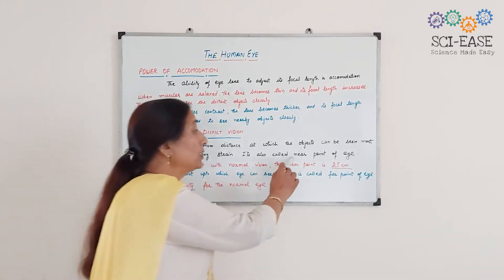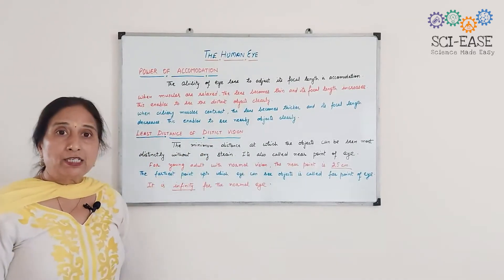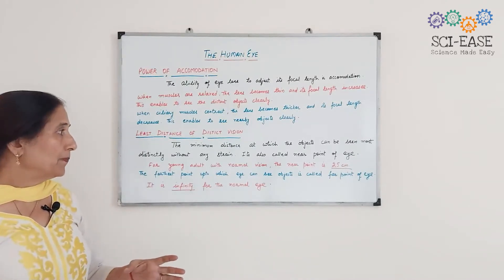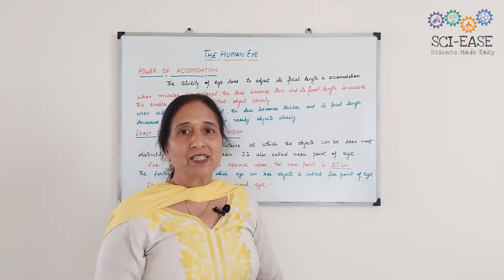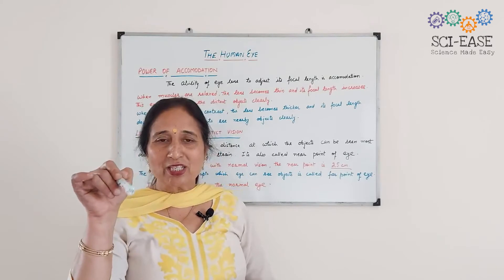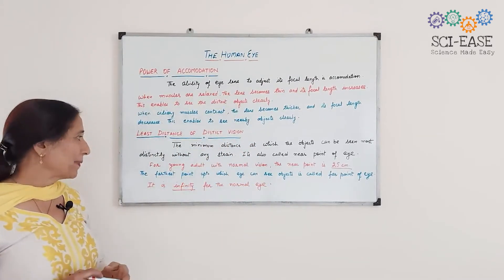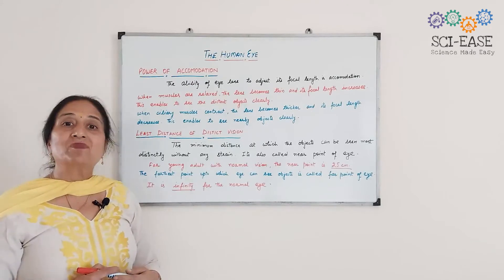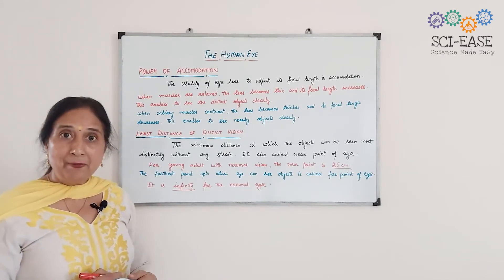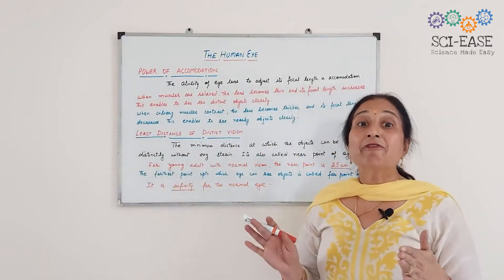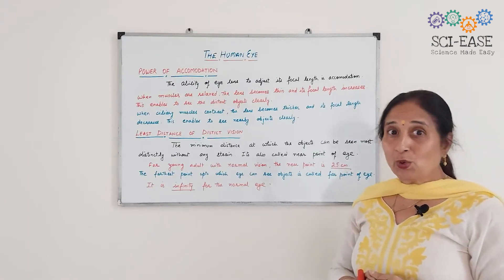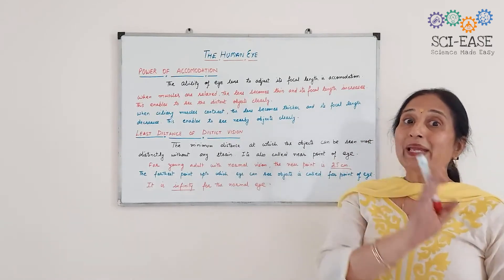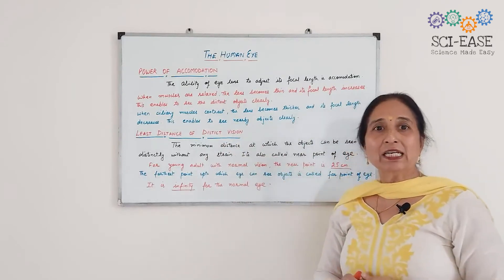It is also called the near point of the eye. For a young adult with normal vision, the near point is 25 cm — so in that multiple choice question, you will select 25 cm. The farthest point up to which the eye can see an object is called the far point of the eye, and the far point is infinity for the normal eye. So the normal eye can see objects clearly between 25 cm and infinity.